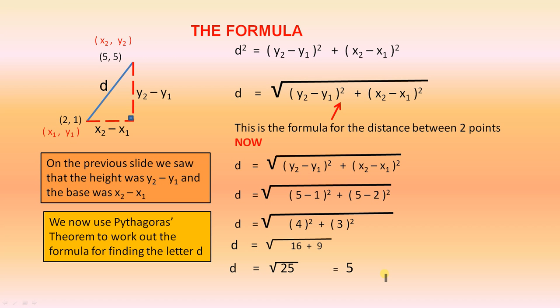The formula. On the previous slide, we saw that the height was y₂ minus y₁, and the base was x₂ minus x₁. Now I've written those here. So there's y₂ minus y₁, that's the difference of the y values, which gives you the height. And there's x₂ minus x₁, which is the difference of the x values to give you the base.